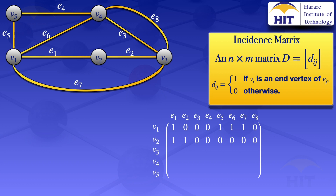Moving on to vertex v3, we see that v3 is an end vertex for edges e2, e3, e7, and e8. So we place ones at e2, e3, e7, and e8, and zeros on all other positions.